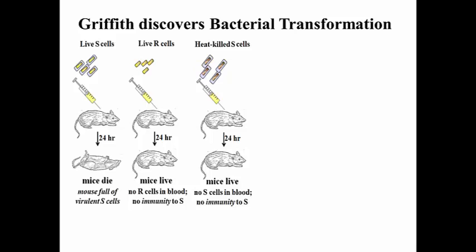The R strain and the heat-killed S strain were injected together. Griffith reasoned that perhaps something from the R strain would combine with something from the heat-killed virulent strain to perhaps confer immunity. Surprisingly, though either alone, the R strain or the heat-killed S strain didn't affect the mice, when he injected both together, the mouse died within a day or so.